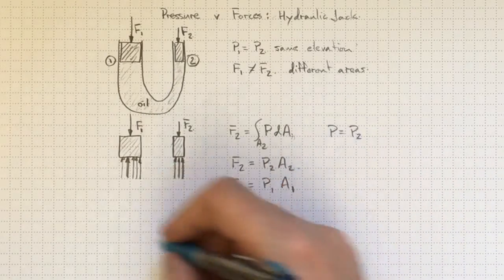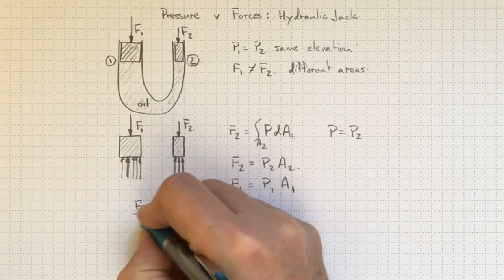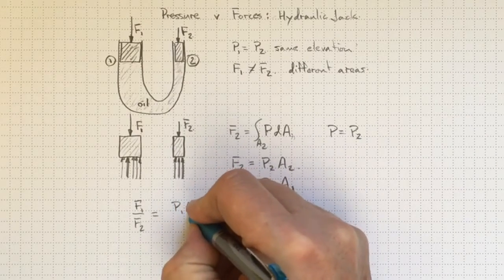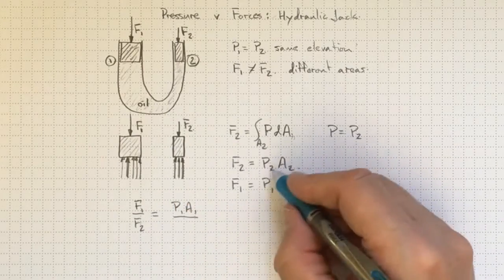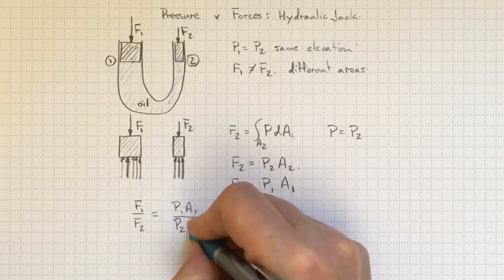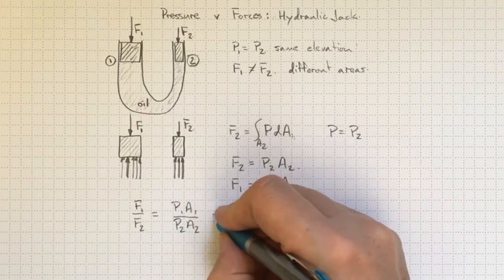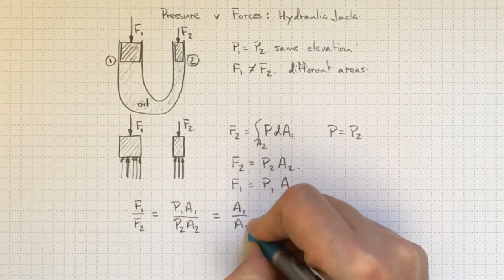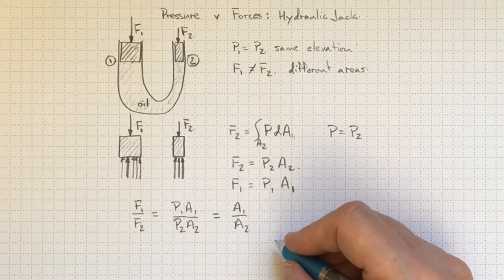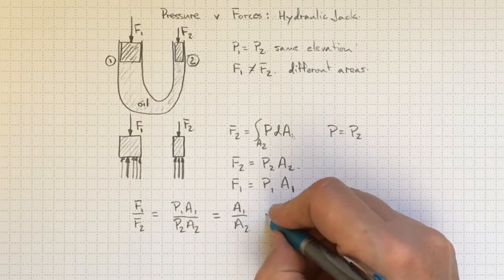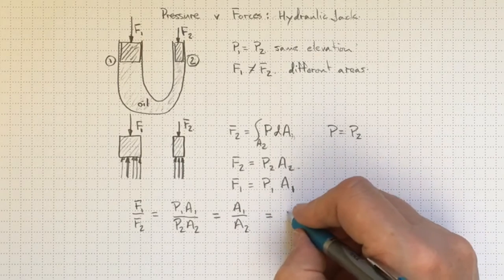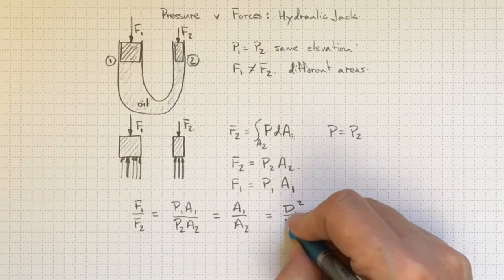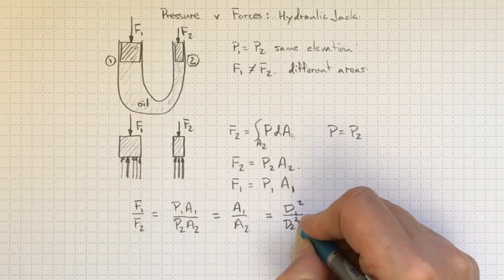But both of those pressures are the same, P2 and P1. So the ratio, F1 divided by F2, well, F1 is equal to P1 A1 over F2 is equal to P2 A2 is equal to just the area ratio between location one and location two. Or, because area is proportional to diameter squared, if these are round pistons, it'll be D1 squared over D2 squared.